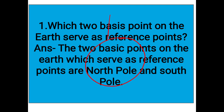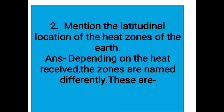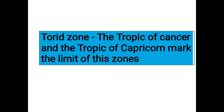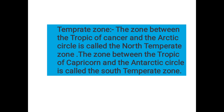Question number two: mention the latitudinal location of the heat zones of the earth. Depending on the heat received, the zones are named differently. As you can see in this picture, from north to south: North Frigid Zone, North Temperate Zone, Torrid Zone, South Temperate Zone, and South Frigid Zone.